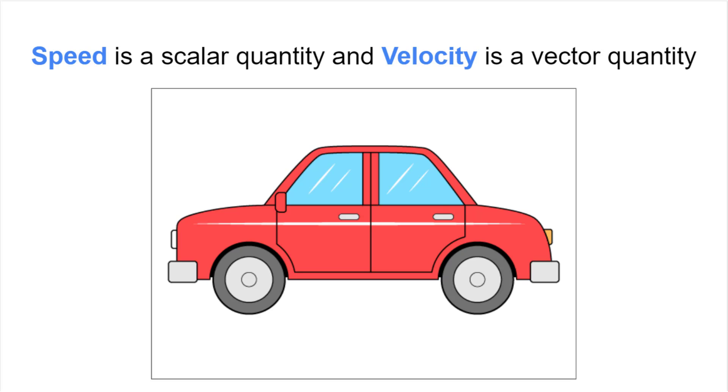Speed is a scalar quantity. This means that you can describe a car traveling to the left as having a speed of 15 meters per second. Or, if it's traveling to the right, it also has a speed of 15 meters per second.